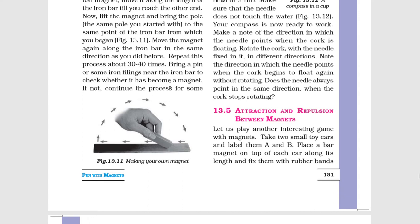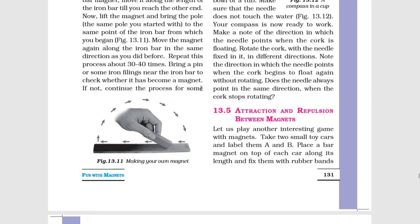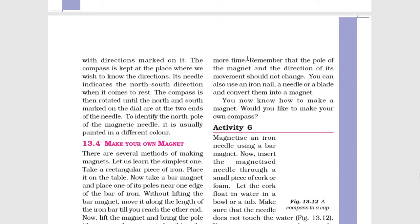Bring a pin or some iron filings near the iron bar to check whether it has become a magnet. Lohe ki pin ya lohe ka burada iske samip le jana hai. If not, continue the process for some more time. Agar wo chumbak nahi bana hai to isi prakriya ko phir se dohrana hai.